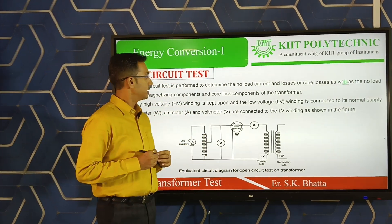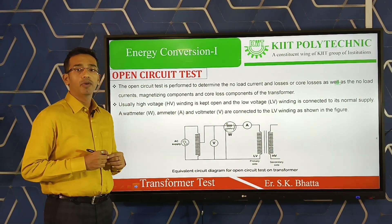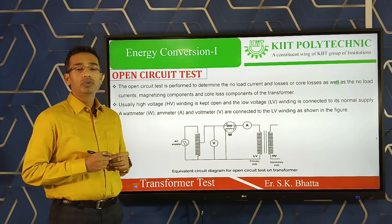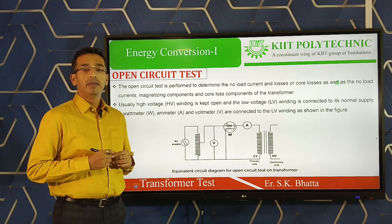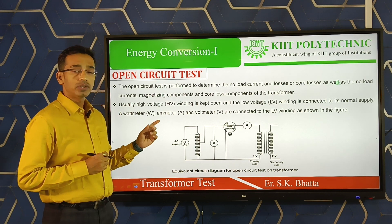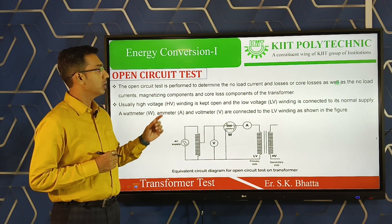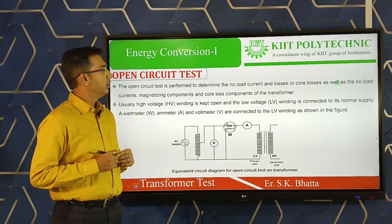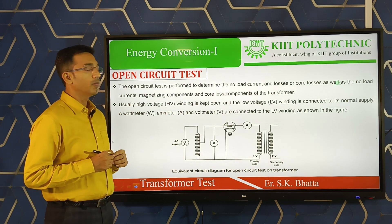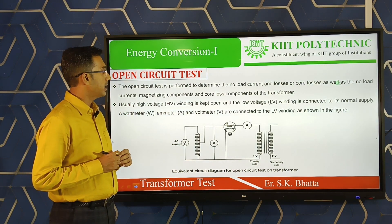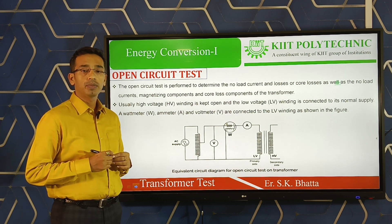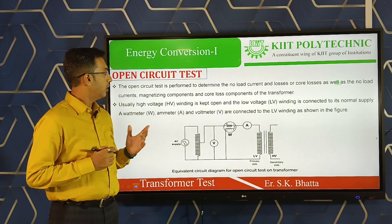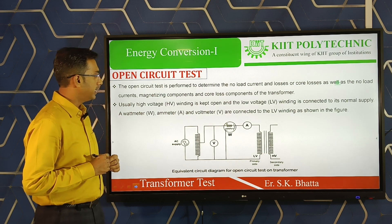The first test is the open circuit test. The purpose of this test is to calculate or measure the core loss or iron loss of the transformer. Additionally, we can also calculate some magnetizing components: the no-load current I₀ and the core loss component of the transformer.